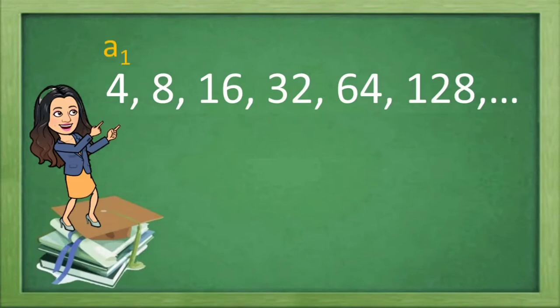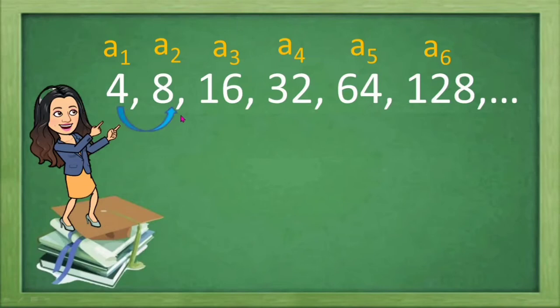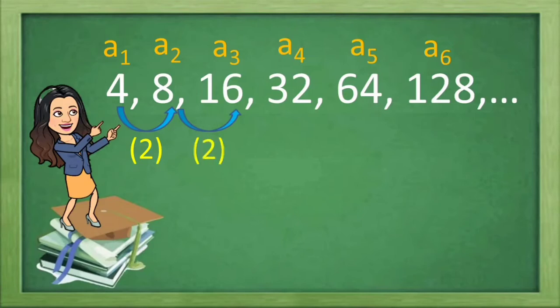Our first term is 4 or A1. The second term is 8 or A2. The third term is A3 or 16. And the fourth, fifth, and sixth terms are 32, 64, and 128. Now, what do we do to 4, our first term, to obtain the second term, 8? We multiply the first term by 2 to get the second term, 8. And what do we do to the second term to get the third term, 16? Still, we multiply it by 2 to get the third term. If we multiply 16 by 2, that is equal to 32, the fourth term. Yes.